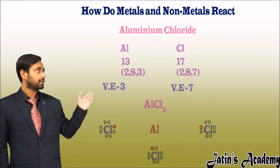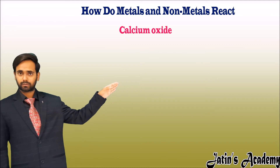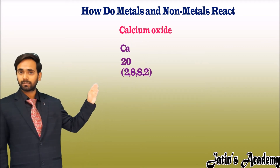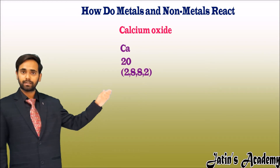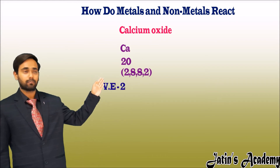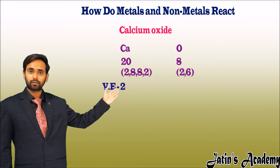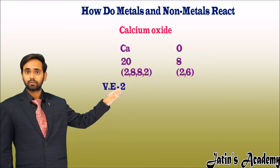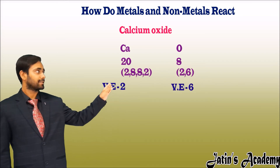Let's see another example: calcium oxide. Calcium's symbol is Ca, atomic number is 20, and its electronic configuration is 2, 8, 8, 2. So, the valence electrons for calcium are 2. On the other side, oxygen has atomic number 8 and electronic configuration 2, 6. So, the valence electrons for oxygen are 6.